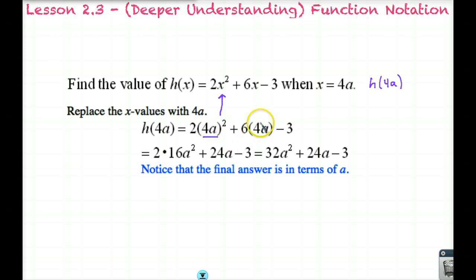Keeping it in parentheses means that whatever we are multiplying on the outside will be multiplied by what is in parentheses. In order to solve this we end up with 2 times 4a squared, which means we square the 4 and get 16 and square the a to get a². Then we multiply 6 times 4a to get 24a minus 3. Simplifying that we get 32a² + 24a - 3. Notice that our final answer is in terms of a because we substituted 4a for all our x values.